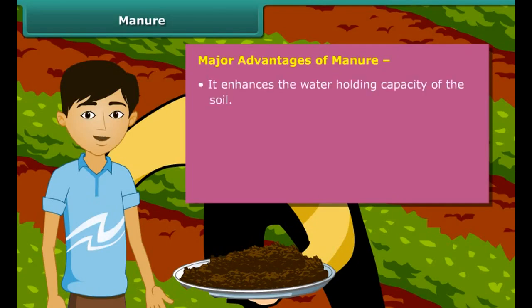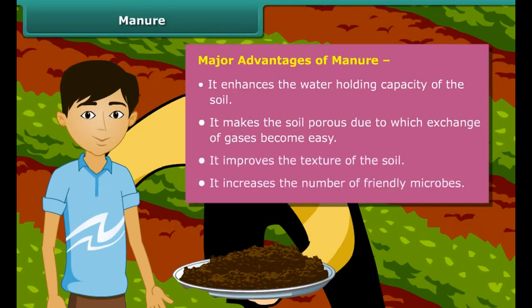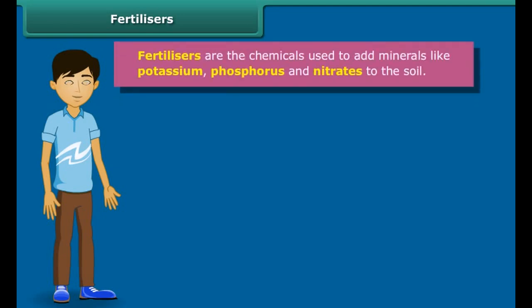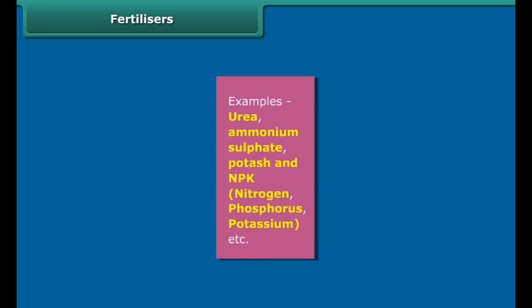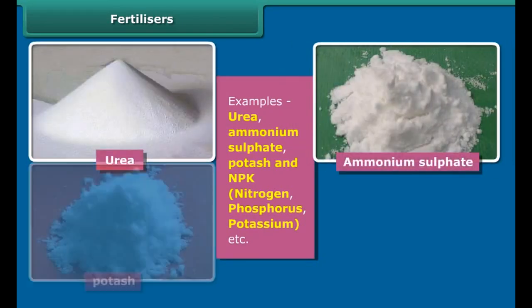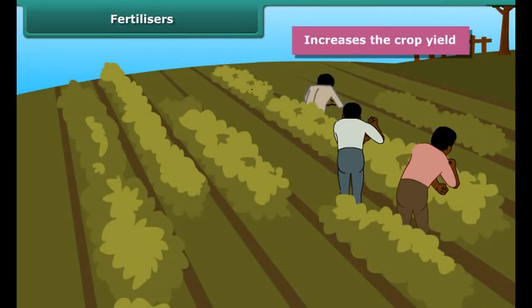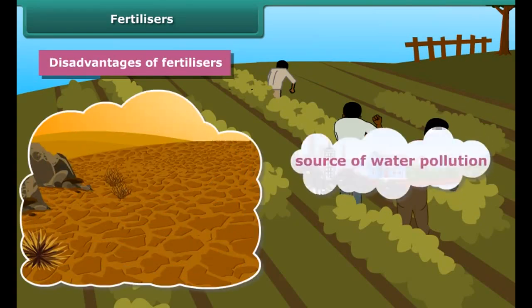Manure enhances the water-holding capacity of the soil. It makes the soil porous, so exchange of gases becomes easy. It improves the texture of the soil and increases the number of friendly microbes necessary for a healthy crop. Like manure, fertilizers are also used to replenish lost nutrients and minerals. Fertilizers are chemicals used to add minerals like potassium, phosphorus, and nitrates to the soil — examples include urea, ammonium sulfate, potash, and NPK (nitrogen, phosphorus, and potassium). However, excessive use of fertilizers makes soil less fertile and causes water pollution.